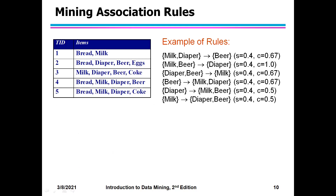Here are some example rules. Look at the first rule: milk and diaper gives you beer. I have intentionally put errors in some of the given support and confidence values. Using the table of transactions, calculate the support and confidence for each of these rules and tell me which ones have errors. Use the formulas we just discussed.